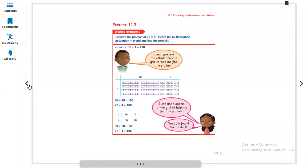Hello everyone, today I'm starting lesson 11.3 from Primary Math Learner Book for grade 3, page number 177. Let's start. Estimate the product of 27 x 4, record the multiplication calculation in a grid and find the product.